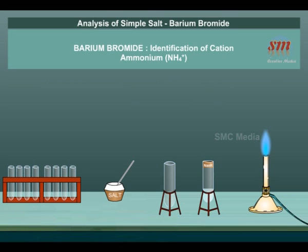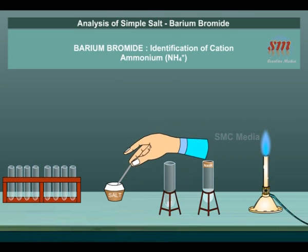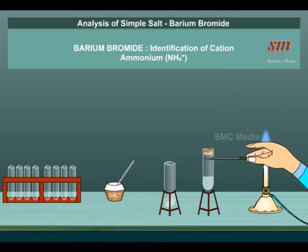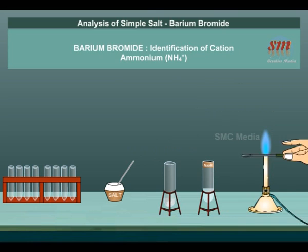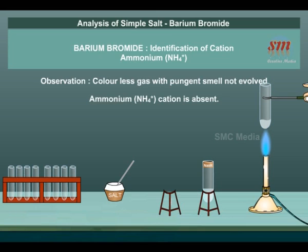Identification of Cation — Test for Ammonium (NH₄⁺) ion: A small quantity of salt is taken in a dry test tube, a few drops of NaOH solution are added and the mixture is strongly heated. Colorless gas NH₃ with pungent smell is not evolved. Ammonium NH₄⁺ cation is absent.